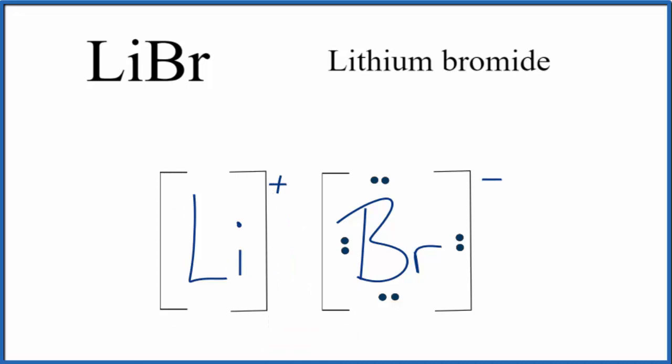And that makes this the Lewis structure for LiBr, lithium bromide. Note that this is what we call a formula unit. We have a bunch of these in a regularly repeating pattern when we have ionic compounds. That's called a crystal.